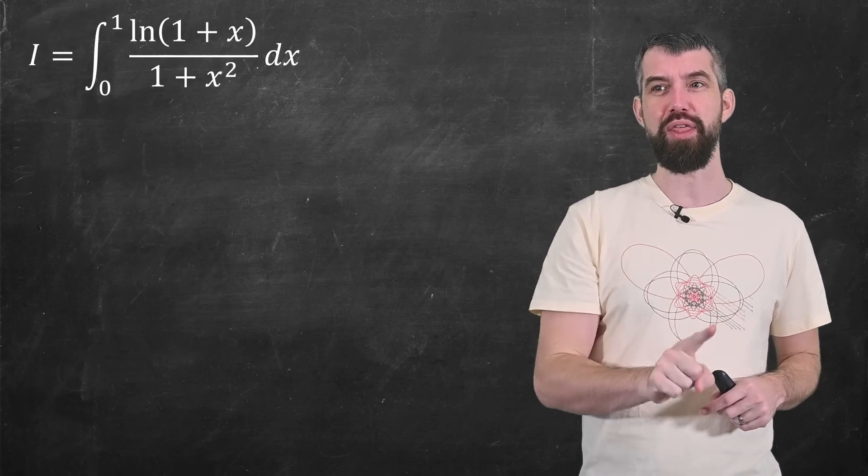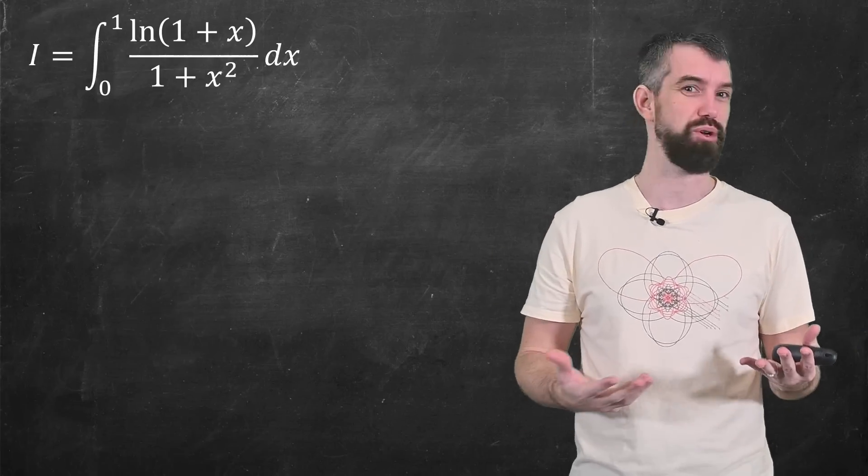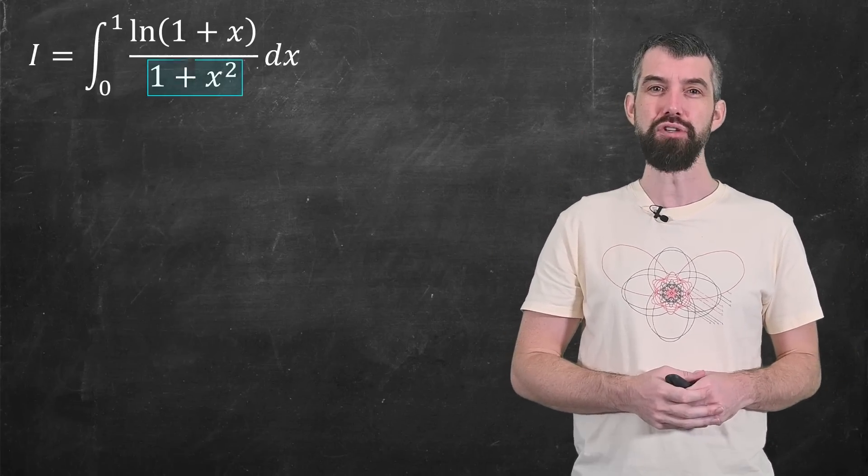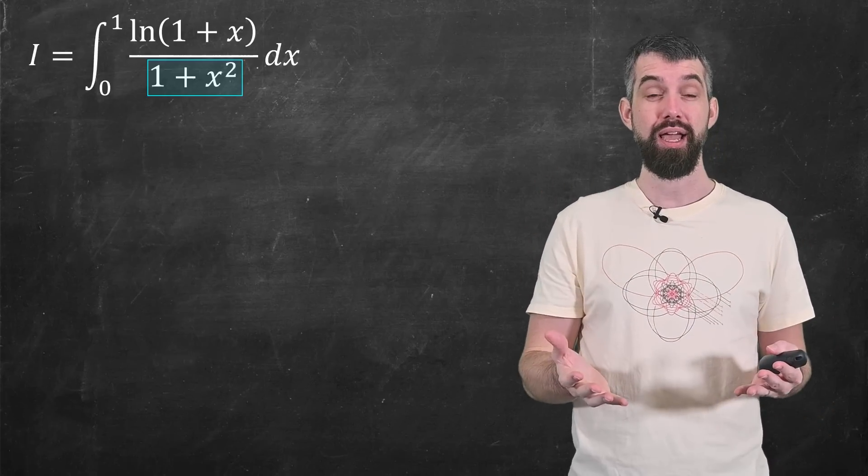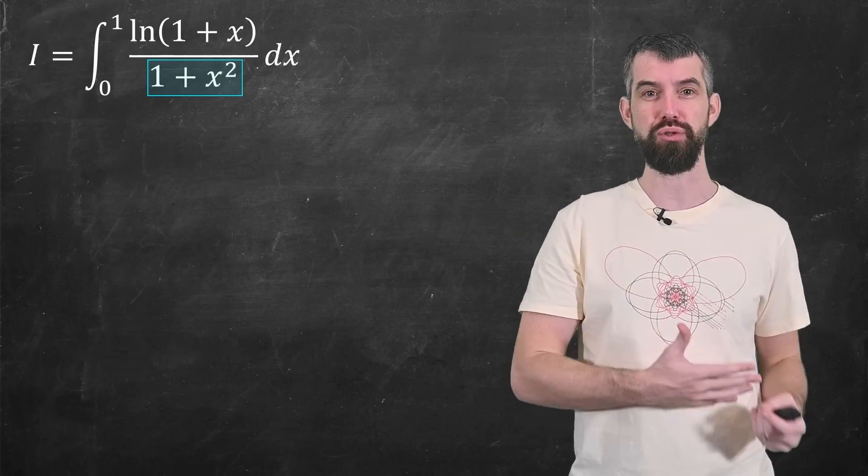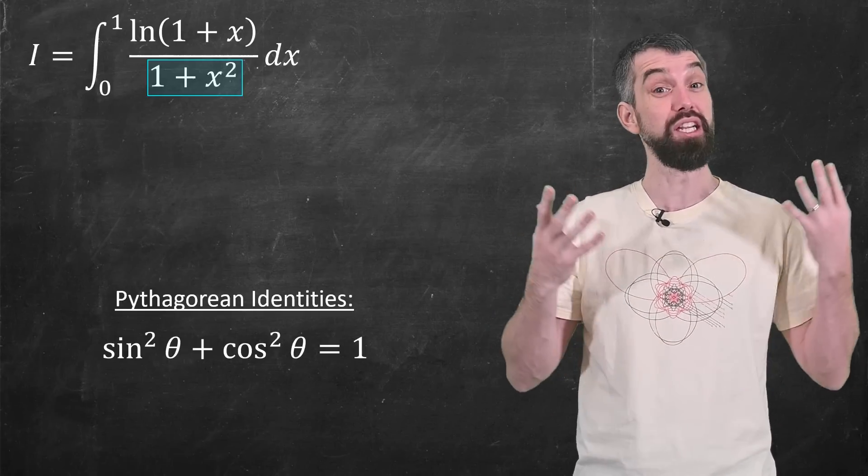For the first method, I'm going to do the approach that I think is maybe most natural to someone who just finished their standard first-year calculus course. And that is to focus on that 1 plus x squared that's in the denominator. The reason for that is it screams out trigonometric substitutions. If there's anything a calculus student should know, it's that there's these three trig identities.